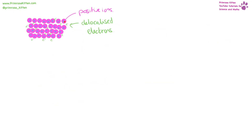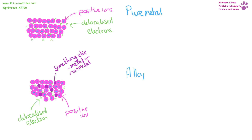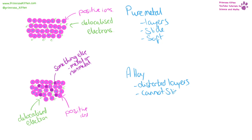Metals are made up of positive ions in a sea of delocalized electrons. These free electrons are the reason metals can conduct electricity and conduct heat well. An alloy looks slightly different — it still has positive ions and delocalized electrons, but there is something else in there, like another metal or carbon. Pure metals have layers that can slide across each other, making them soft. Alloys have distorted layers that cannot slide, making them hard.